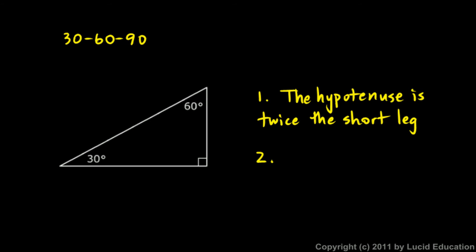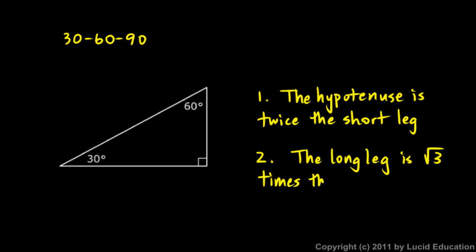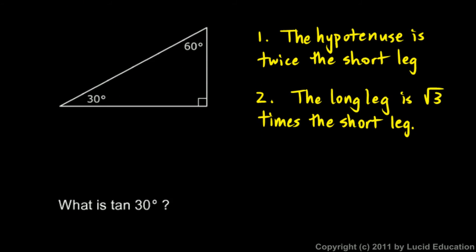The second fact for every 30-60-90 triangle is that the long leg equals the short leg times the square root of 3. You can prove these facts using the Pythagorean theorem, which we covered in geometry. Write this down — it's important: the long leg is √3 times the short leg, and this is true for every single 30-60-90 triangle.